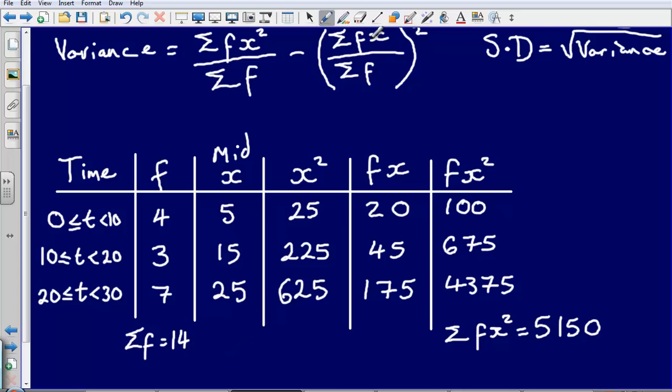Then I need to work out the sum of fx. So the sum of fx, so 20 plus 175, that's going to give me 195 plus 45. That's going to give me the sum of fx as 240.